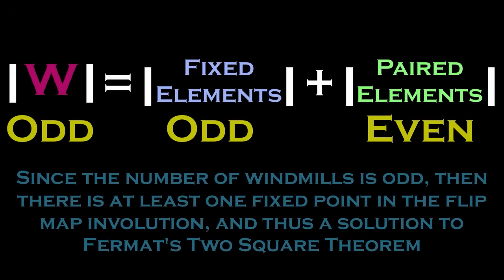Then since we know the number of windmills is odd, then when we consider the flip map involution, we know that it has a fixed point. And therefore, there exists a solution to Fermat's two squares theorem.